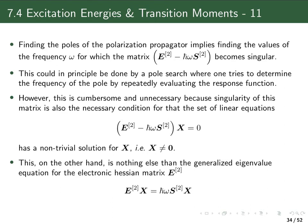Now let's look at how we do that in practice. To identify the singularities or poles of the response function as excitation energies, we look at the spectral representation or sum-of-states expression for the linear response function. But that's not how you want to calculate it, because you would need to know all the excited states. So we have to go to the matrix representation of the linear response function or polarization propagator, as derived at the end of chapter three.